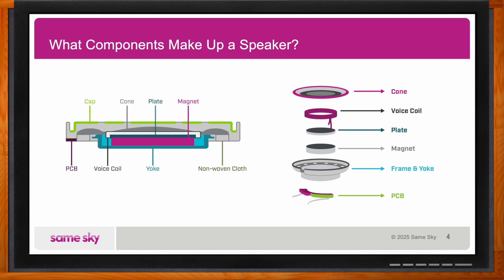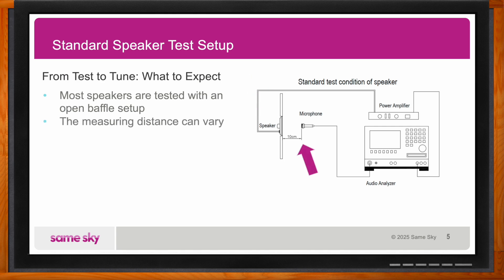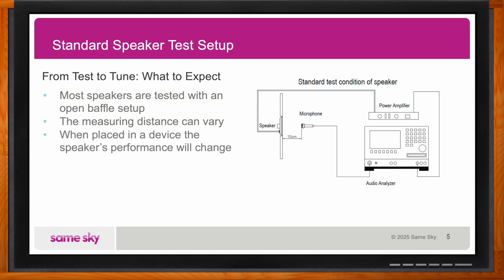To have a good understanding of the characteristics of a speaker, it's important to know how they're characterized. We use audio analyzers to capture all the acoustic and some of the electrical characteristics of a speaker. A critical point is to be aware of the conditions in which a speaker is characterized — namely the baffle configuration and the distance between the speaker and the microphone. Most speakers tested in an open baffle configuration are then placed in a box of some form, which forms a resonance chamber that changes the speaker's performance.